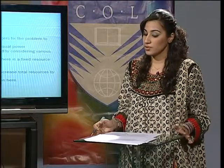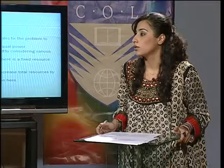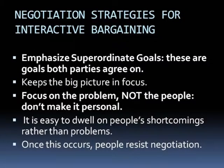Negotiation strategies for integrative bargaining: first, emphasize superordinate goals — these are goals both parties agree on, which keeps the big picture in focus. Second, focus on the problem, not the people — don't make it personal. It is easy to dwell on people's shortcomings rather than problems, but once this occurs, people resist negotiation.